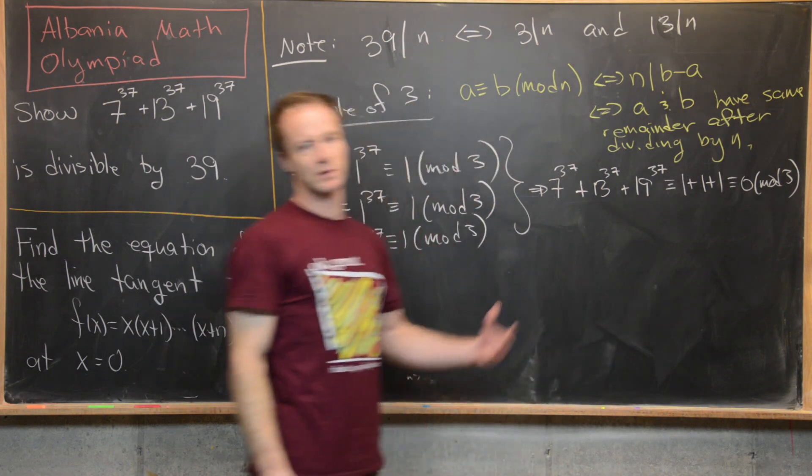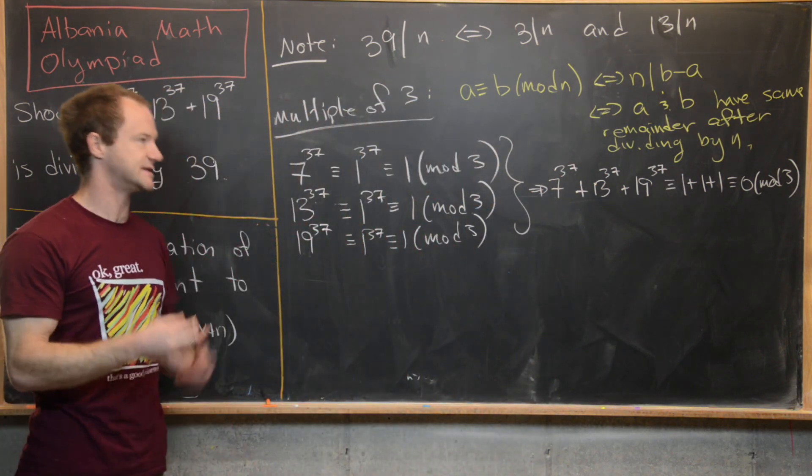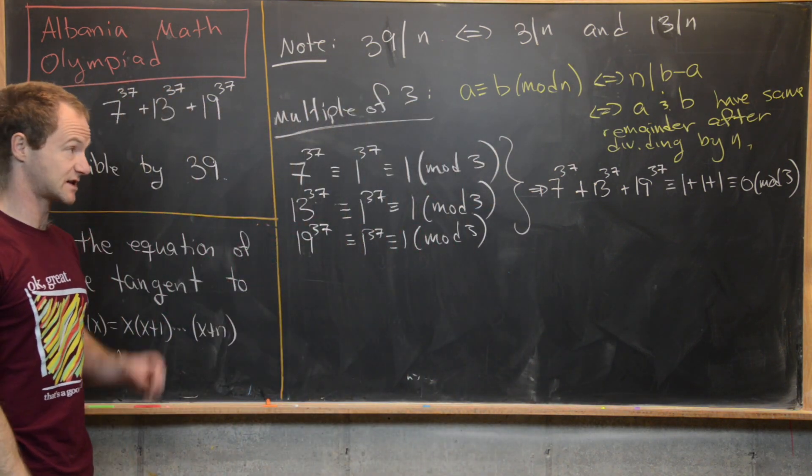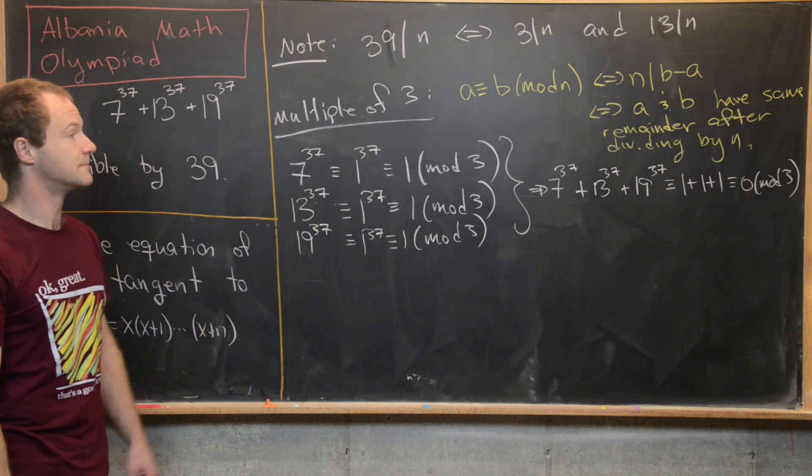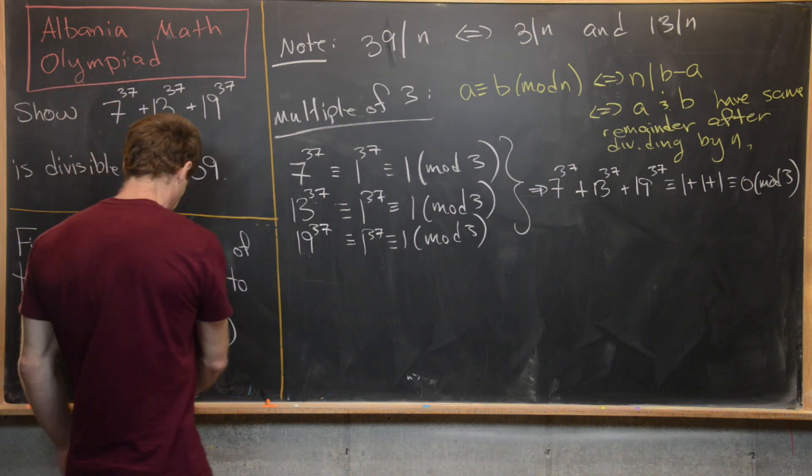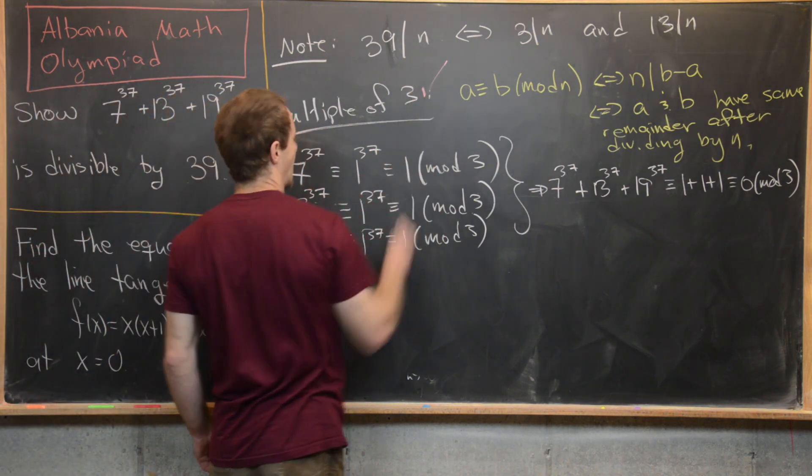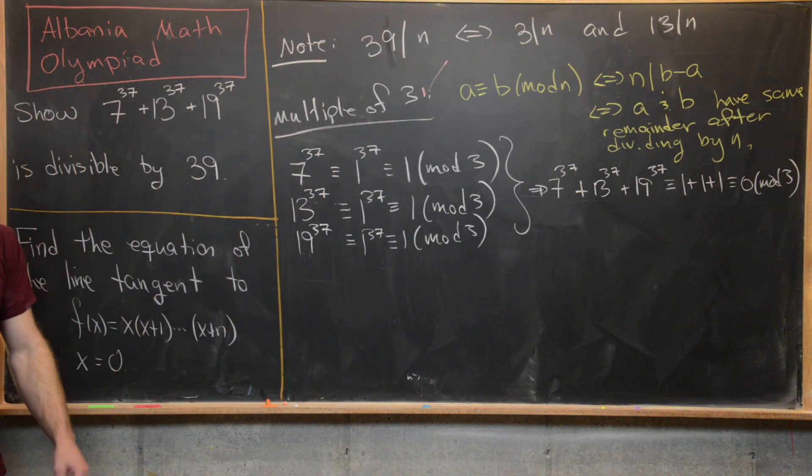Because 1 + 1 + 1 is 3 but 3 is clearly a multiple of 3. So that's congruent to 0 mod 3. So we have proven that our object over here is a multiple of 3.